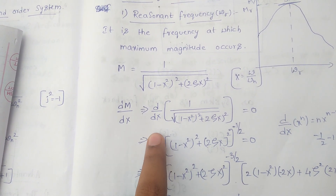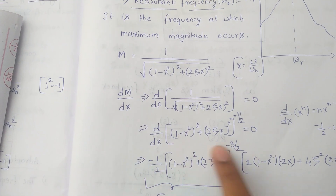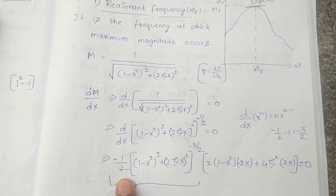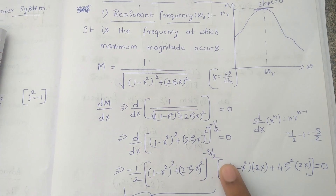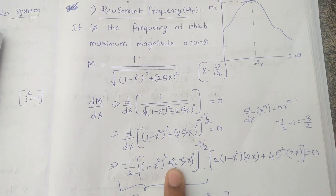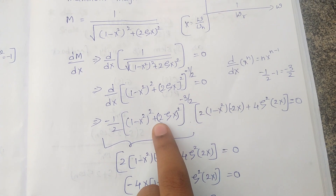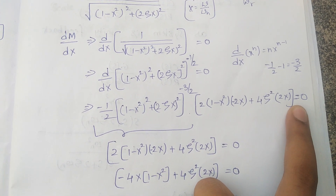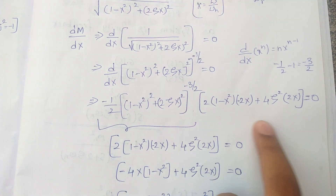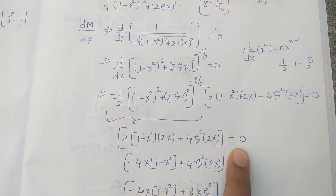The square root is in the denominator, so writing the equation brings it to power −1/2. Differentiating in the form h^n gives n·h^(n−1): (−1/2) · ((1 − h²)² + (2ζh)²)^(−3/2) · (d/dh of the inner expression). Differentiating the inner expression: 2(1 − h²)(−2h) + 4ζ²·2h = 0. Since the first term transfers to the right-hand side it becomes 0, the remaining terms are: 2(1 − h²)(−2h) + 4ζ²·2h = 0.